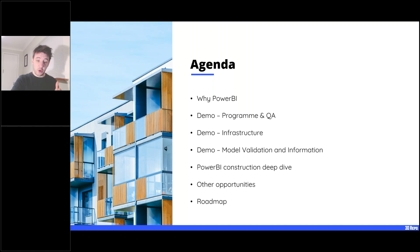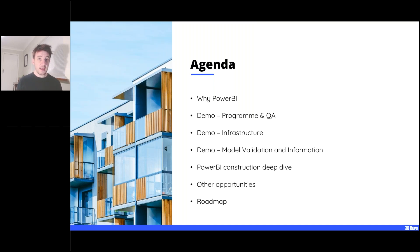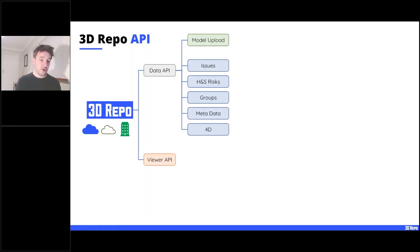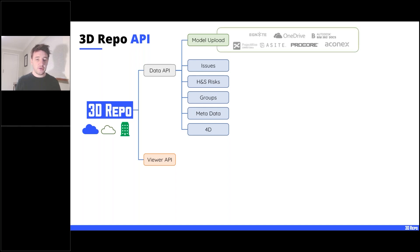I'll do a deep dive into one example so anyone who wants to see how we build these things can follow along, then show the roadmap for this product development and other use cases we see. First, the 3D Repo APIs: as Andrew mentioned, these can be hosted on our cloud, your cloud, or on-premise. We split them into three subsections: model upload, data API, and viewer API.